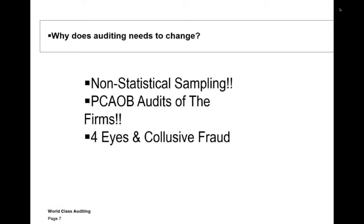Think about this — we do non-statistical sampling. We take a sample of 30 in a population of 25,000 and think we're going to find things. If we took statistical samples, we'd need to triple the number of auditors just to achieve a proper confidence level. It's a periodic sample — we only do it once a year. I want to read you an audit report from the PCAOB for one of the big four firms — based on 51 companies — and this is public information. It's the most scathing audit report I've ever seen.